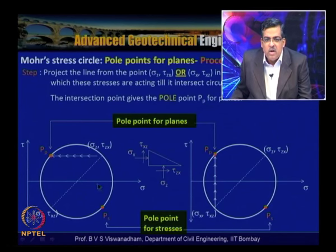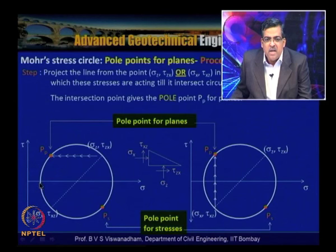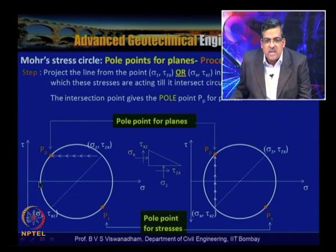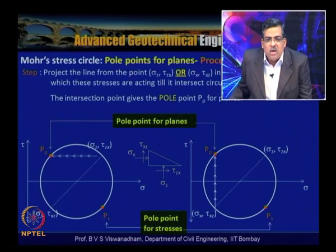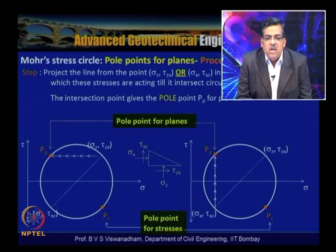When joining the pole point to the major principal stress sigma 1 (where tau equals 0), the connecting line represents the major principal plane, and the line to sigma 3 represents the minor principal plane. To find the stress on a plane inclined at angle alpha within the element, draw a line from the pole at that inclination; where it intersects the Mohr circle gives the stress state (sigma, tau) on that particular plane.